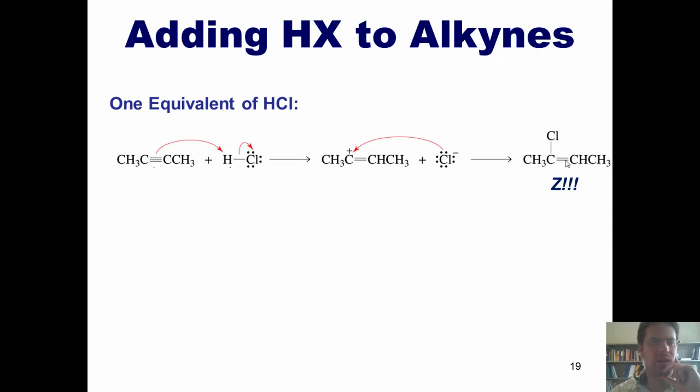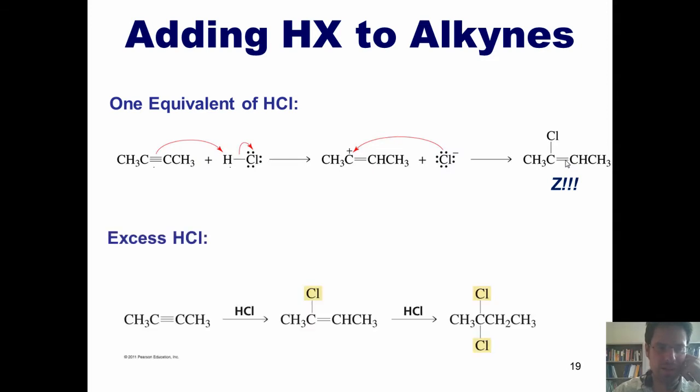Now, what in the world happens with an alkyne if we add more than one equivalent of HCl? In other words, if we add an excessive amount of HCl relative to the alkyne itself? Well, what happens is this. The alkyne will naturally, as shown up here, react with the HCl to place a chlorine on one position and leave this carbon-carbon double bond.